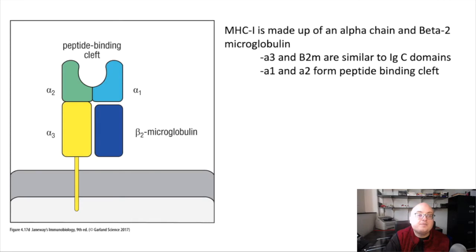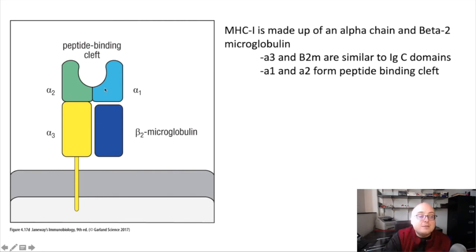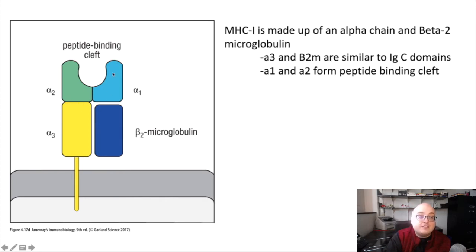Let's look at the structure of MHC. MHC class 1 has an alpha chain made up of three subunits: alpha 1, alpha 2, and alpha 3. MHC class 1 also binds to another protein subunit encoded by a different gene called beta-2 microglobulin. When the alpha chain of MHC class 1 binds with beta-2 microglobulin, we get the whole MHC class 1 molecule. Alpha 1 and alpha 2 form a peptide binding cleft—basically a little trough or indentation where the antigenic peptide lays and can be presented by the MHC molecule.